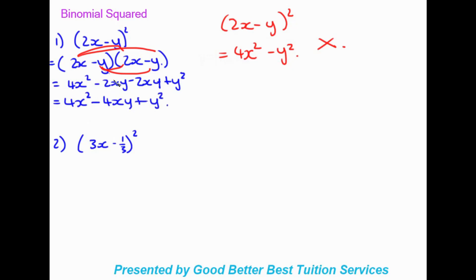So it's not difficult — from the binomial squared in brackets, we write out the brackets twice and multiply them by each other. Once we've multiplied out, we look for any like terms and simplify the expression down to its simplest form.